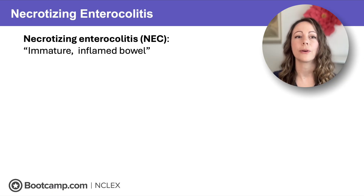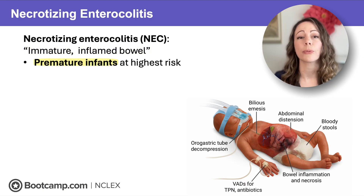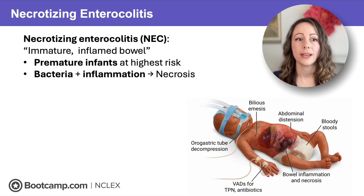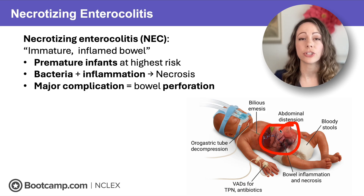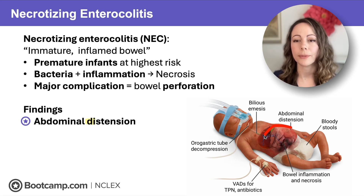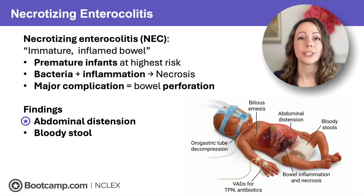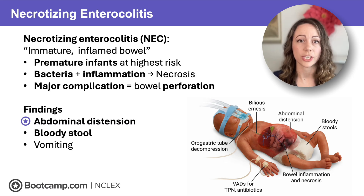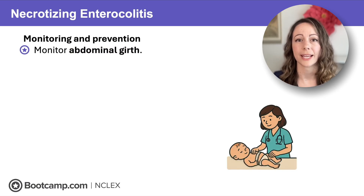Now to necrotizing enterocolitis — think immature inflamed bowel. This affects newborn clients, particularly premature newborns with immature GI tracts. When there's an immature intestinal wall, bacteria can grow, the bowel becomes inflamed, and that can lead to deadly necrosis. Our major complication is bowel perforation. Findings include abdominal distension — usually an early sign — as well as bloody stool and vomiting due to that bowel inflammation. Monitor and prevent this by tracking abdominal girth, which is usually the first sign.